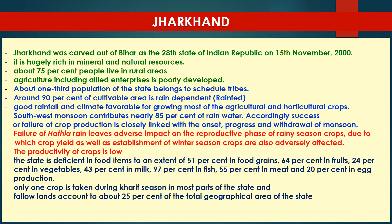Here we will get information about Jharkhand in brief. Jharkhand was carved out of Bihar as the 28th state of the Indian Republic on 15th November 2000. Jharkhand is usually rich in minerals and natural resources. About 75% of people of Jharkhand live in rural areas. Agriculture including allied enterprises is poorly developed in Jharkhand. About one-third of the population belongs to scheduled tribe caste. About 90% of cultivable area is rain-fed, where crops can be grown only during monsoon rainfall. Good rainfall and climate are favorable for growing most agriculture and horticulture crops. Southwest monsoon contributes nearly 85% of rainwater.